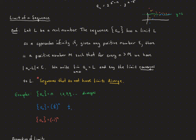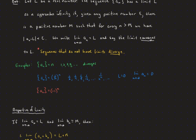The blue sequence — one-half to the first, one-half squared, one-half cubed, one-half to the fourth — is getting closer and closer to zero. So the limit as n goes to infinity of a sub n equals zero, and it converges. The red sequence — negative 1 to the first is negative 1, negative 1 squared is positive 1, and so on — just keeps alternating, so it's not getting closer to a single number, and therefore the sequence diverges.